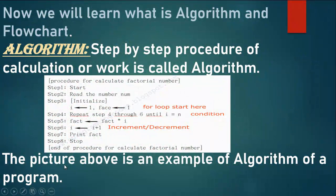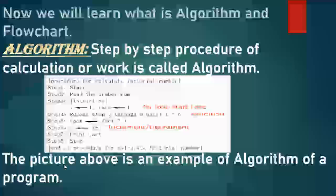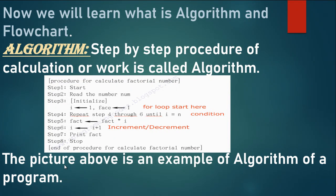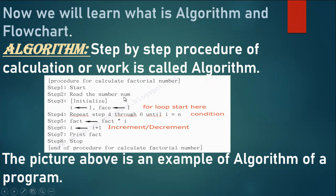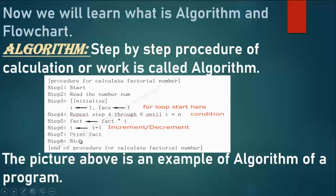Now we will learn what is algorithm and flowchart. Algorithm: a step by step procedure of calculation or work is called an algorithm. The picture you are seeing is an example of algorithm, where the programs are written step-wise. This example shows the procedure for calculation of a factorial number.